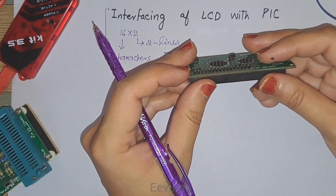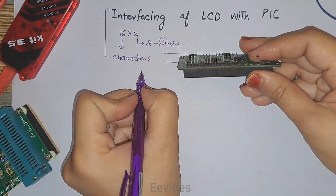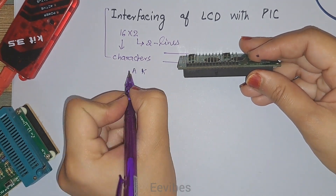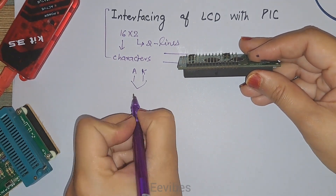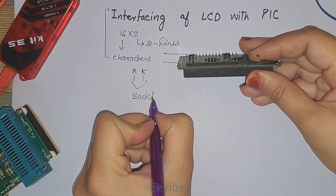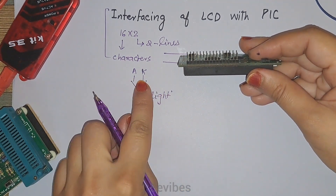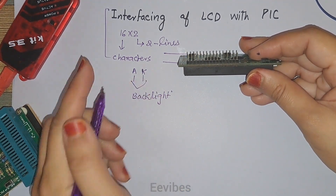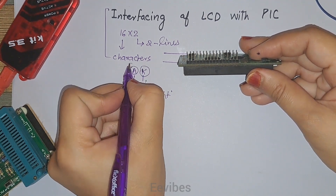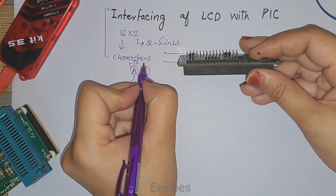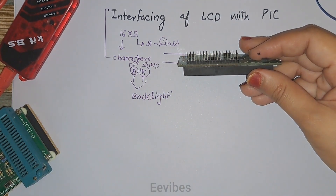Looking at the pins of the LCD, the first two pins are marked as K and A. Most LCDs have these pins, and they are used for the backlight. If you want to turn on the backlight of the LCD, you will use these two pins. A represents the anode and K represents the cathode, so plus five volts will be provided at the A pin while the cathode is grounded.